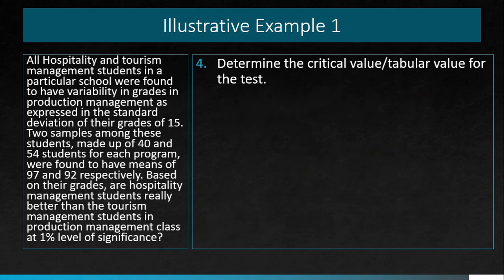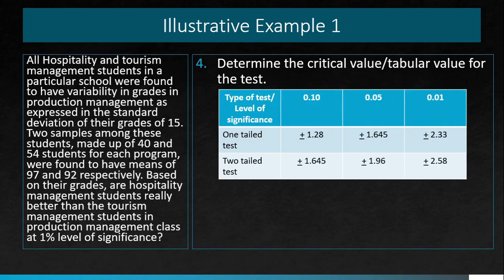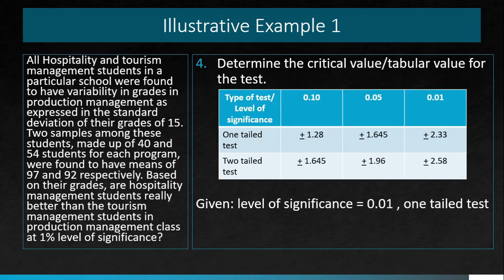We will now determine the critical or tabular value. At a level of significance of 0.01 and a one-tailed test, the tabular value is 2.33, as discussed in the previous videos.